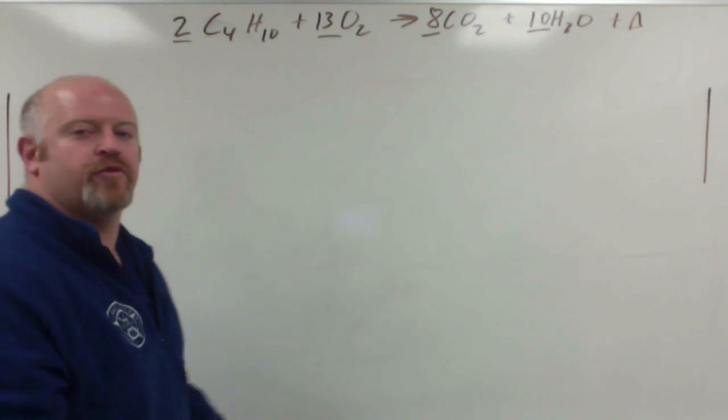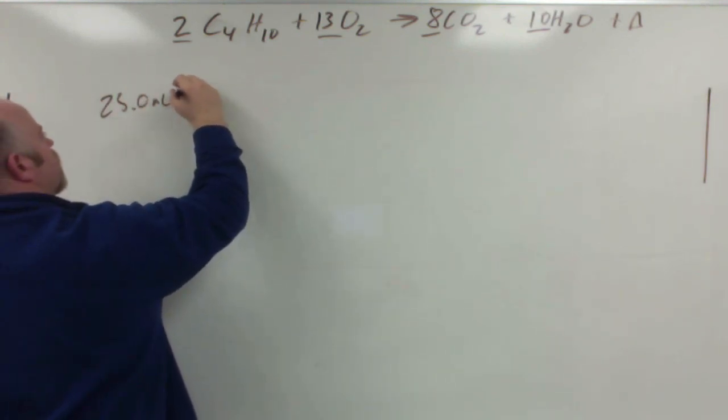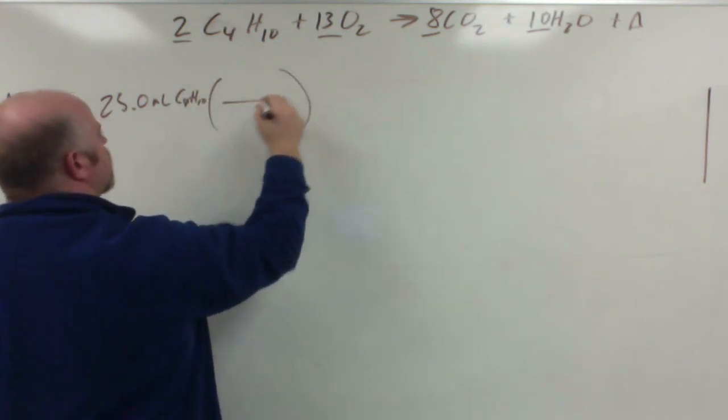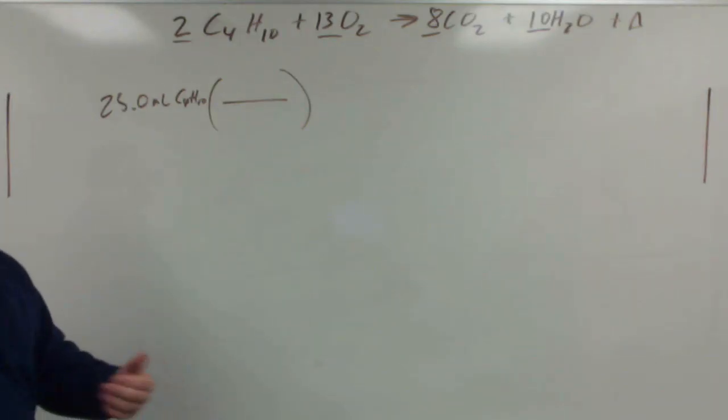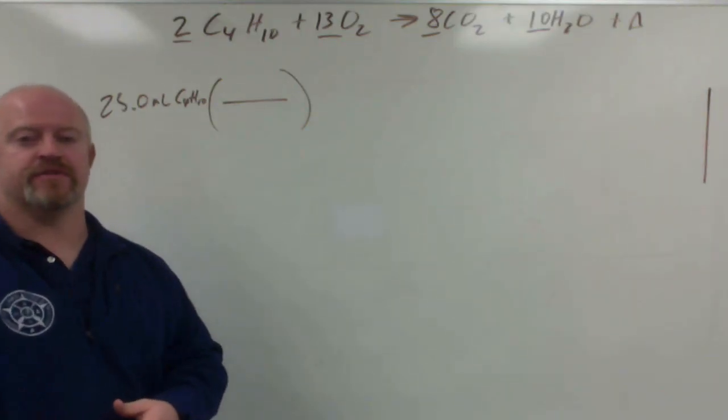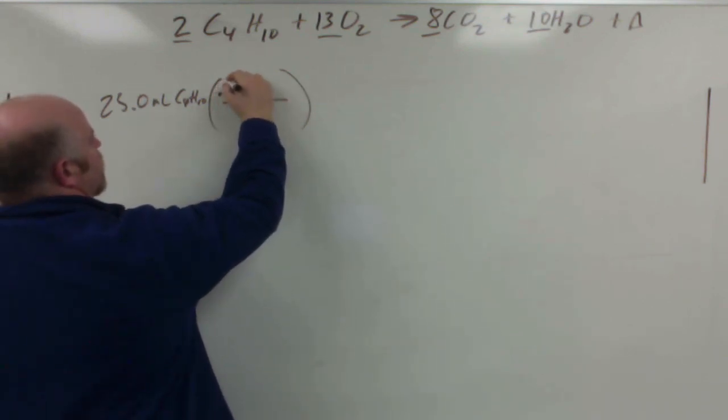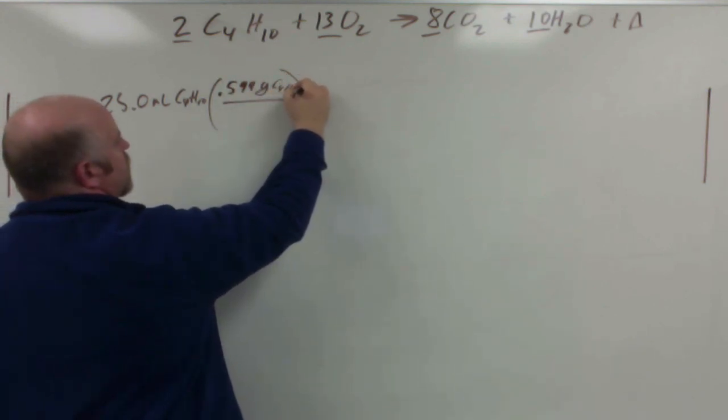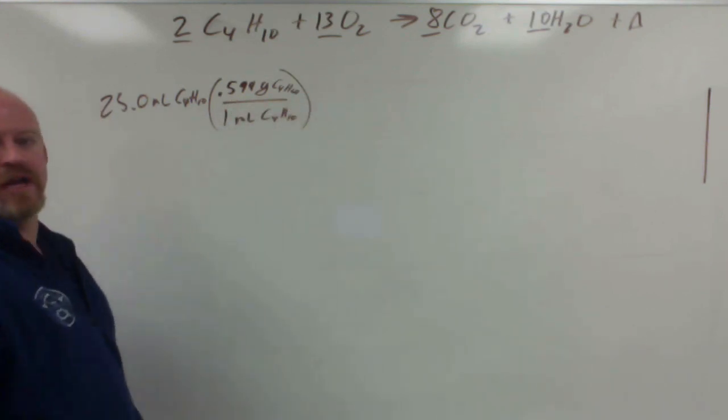So I have 25 milliliters of butane. Well, I have a volume of a liquid here, so I want to actually get into grams. So my first step is to use that density that we see in the end of the problem where it says 0.599 grams per milliliter. So since the density is 0.599 grams of butane per one milliliter butane, we'll start that way.